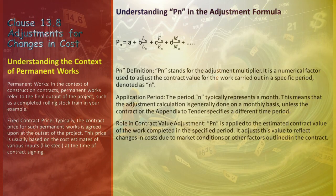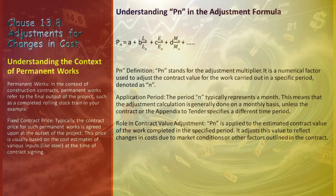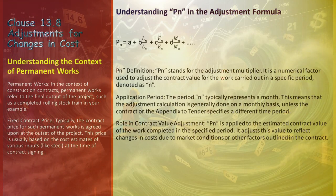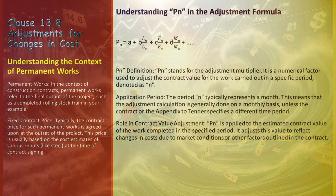PN is applied to the estimated contract value of the work finished in the specified period, modifying it to mirror changes in costs due to market conditions or other defined factors. This clause typically applies to contracts where contractor payments are adjustable based on factors like inflation, currency fluctuations, or changes in cost indices. These adjustments are calculated using specific formulae, applied to each currency in which the contract price is payable.